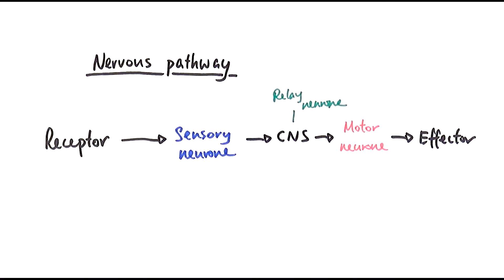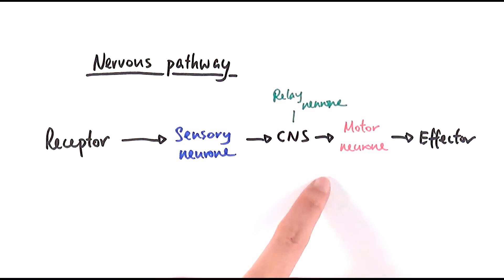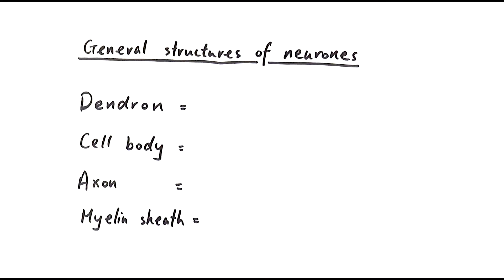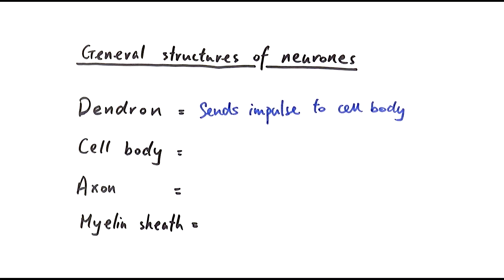So that's the nervous pathway. Now we'll look at the structure of the sensory neuron, relay neuron, and motor neuron, and specific structures within each. First, let's look at some general structures found in neurons. The dendron refers to the part of the neuron that sends the impulse to the cell body. In some neurons the cell body is in the middle; in others it's at the beginning, depending on the type.